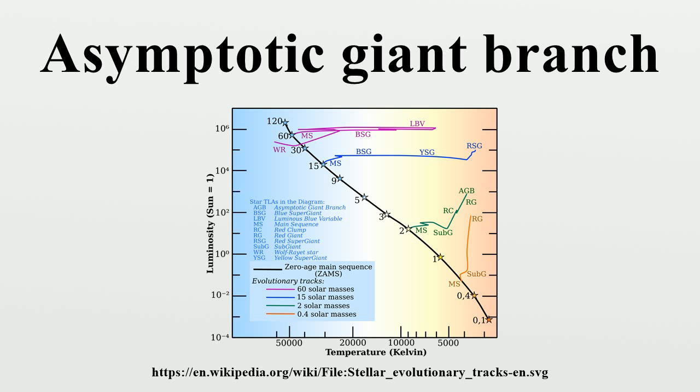Stars close to the upper mass limit to still qualify as AGB stars show some interesting properties and have been dubbed super AGB stars. They have masses above 7 solar masses and up to 9 or 10 solar masses. They represent a transition to the more massive supergiant stars that undergo full fusion of elements heavier than helium.